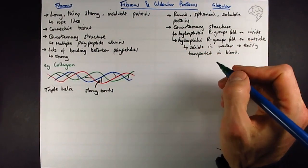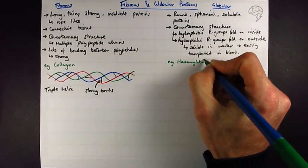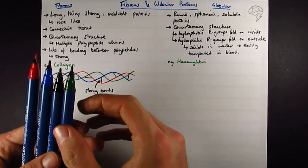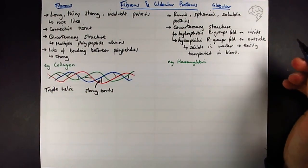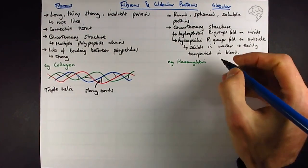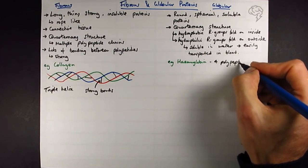The example we want to know about for globular proteins is hemoglobin. You don't really need to go into too much detail here, but I'm going to give you this. OCR students at Excel, you don't need to know quite as much detail, but it's good to know. It's got four polypeptide chains.